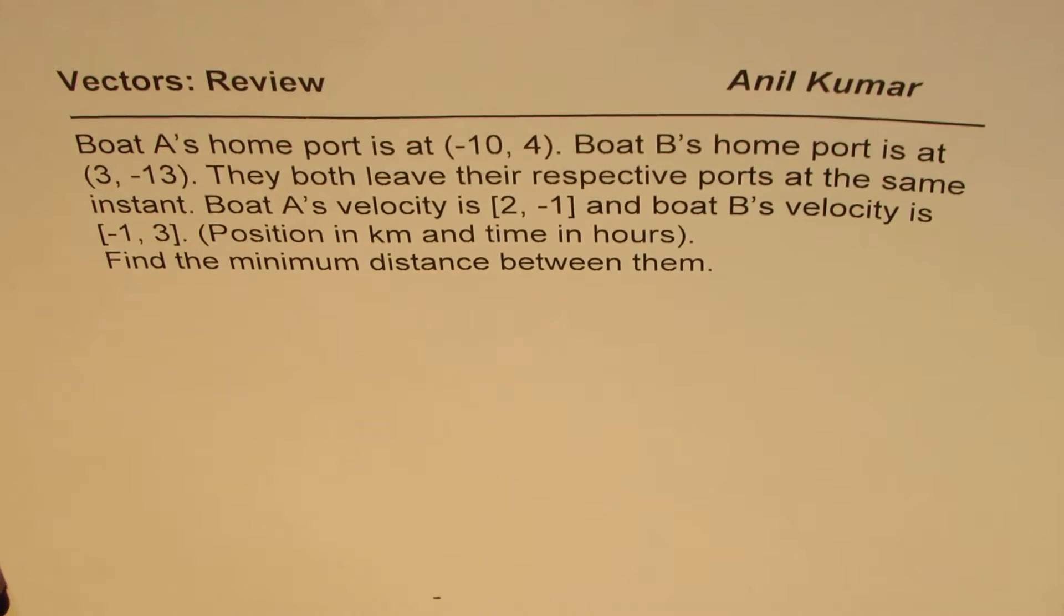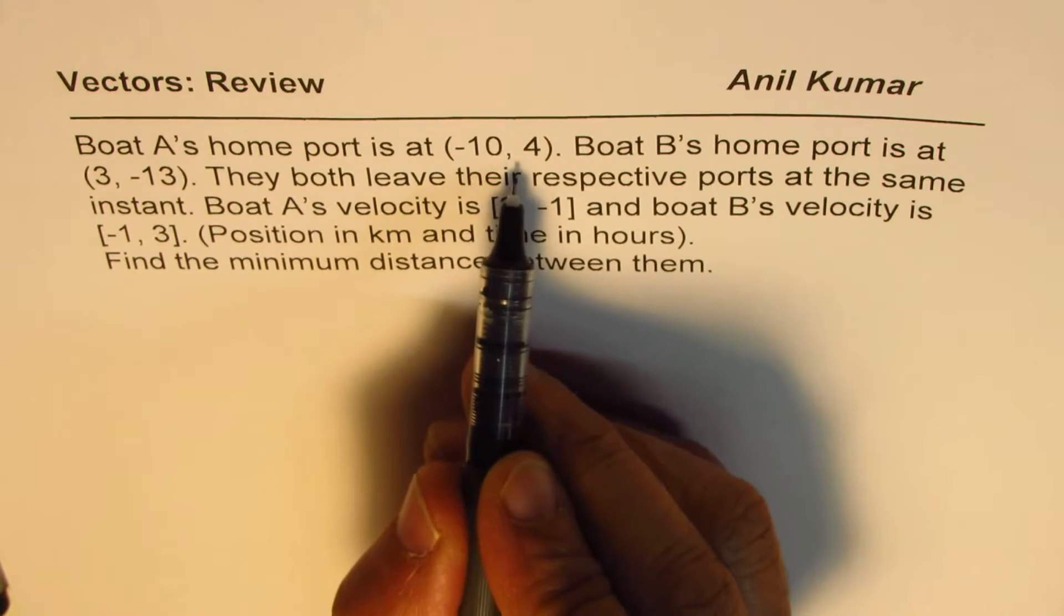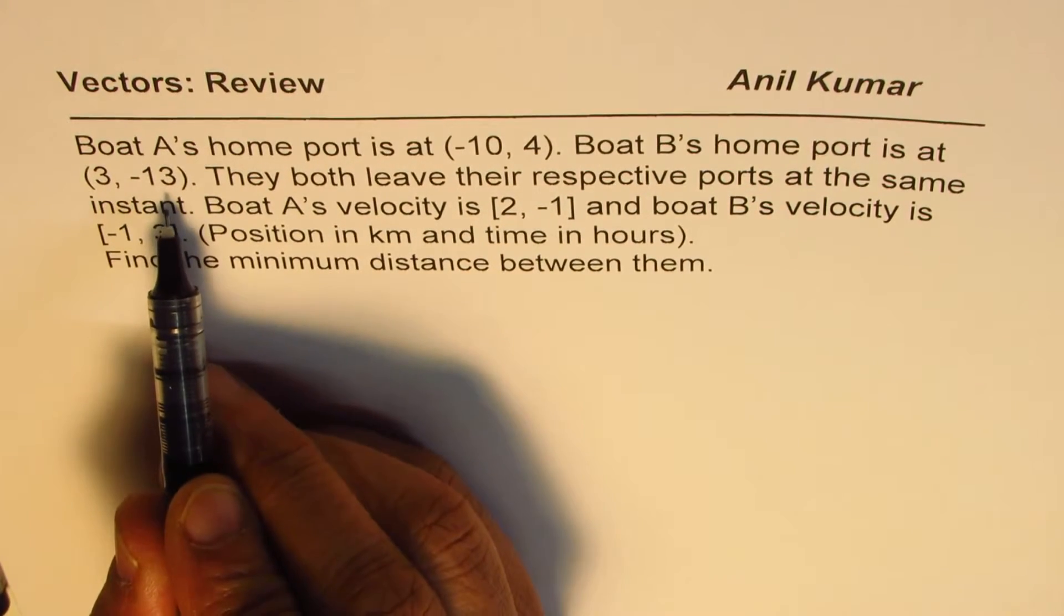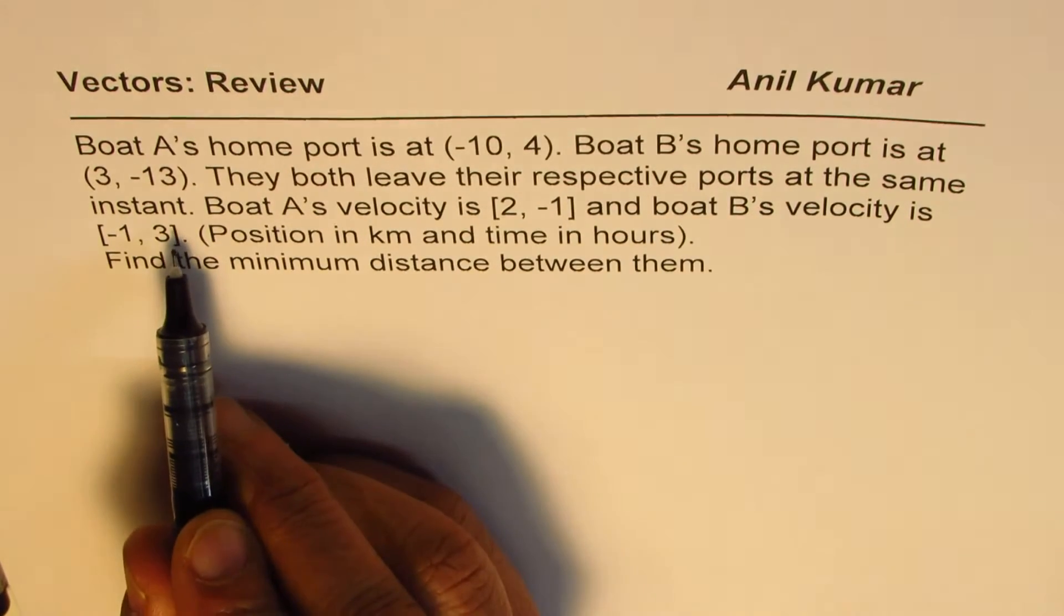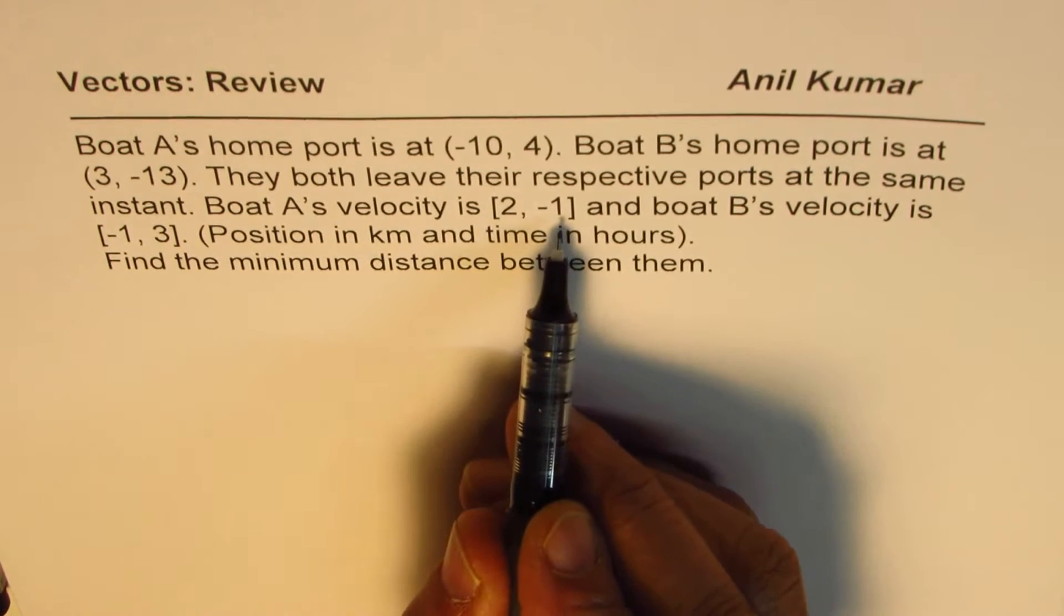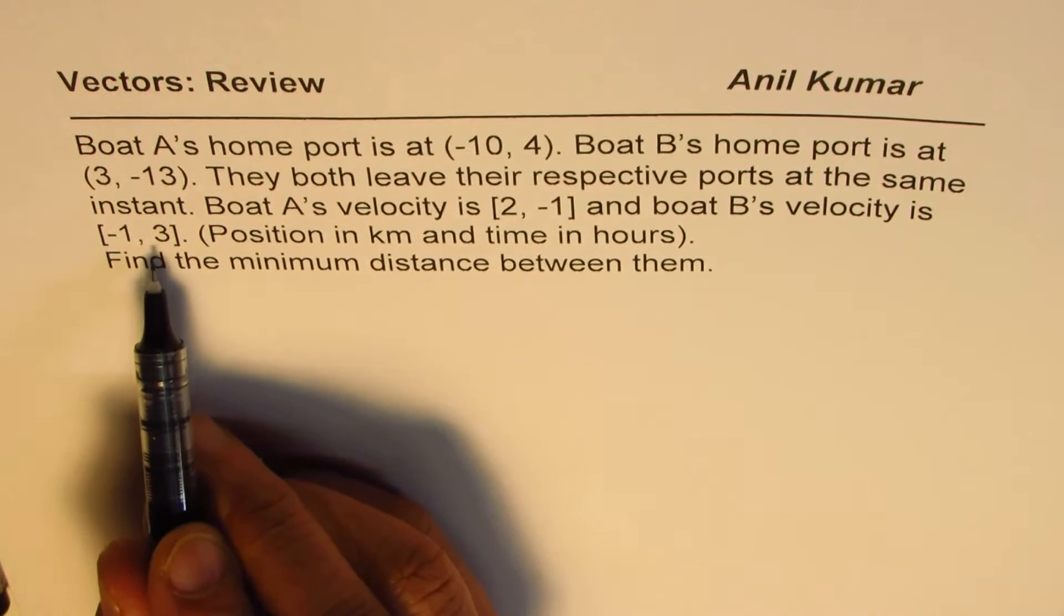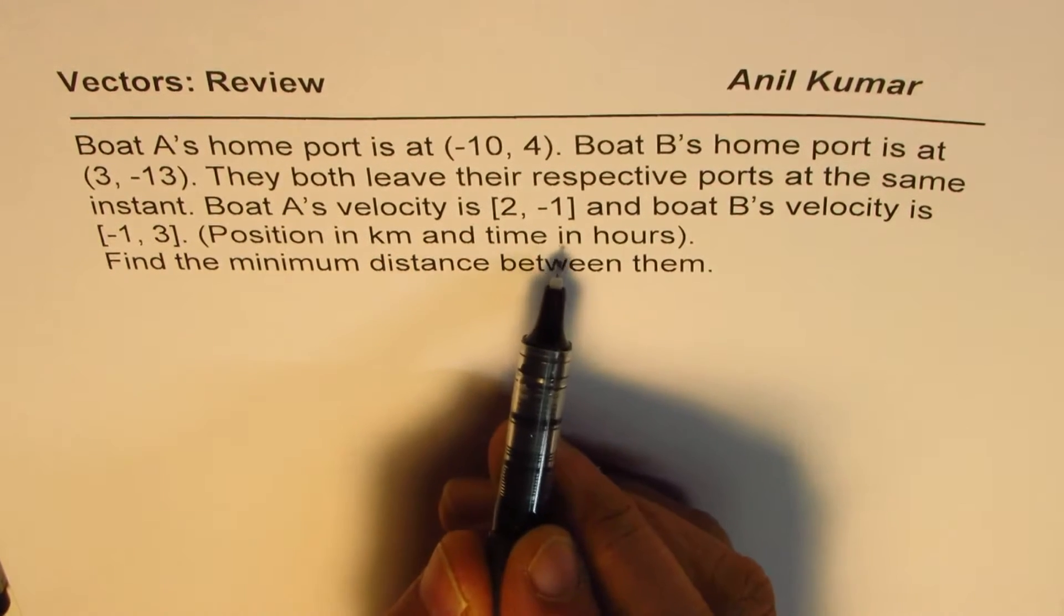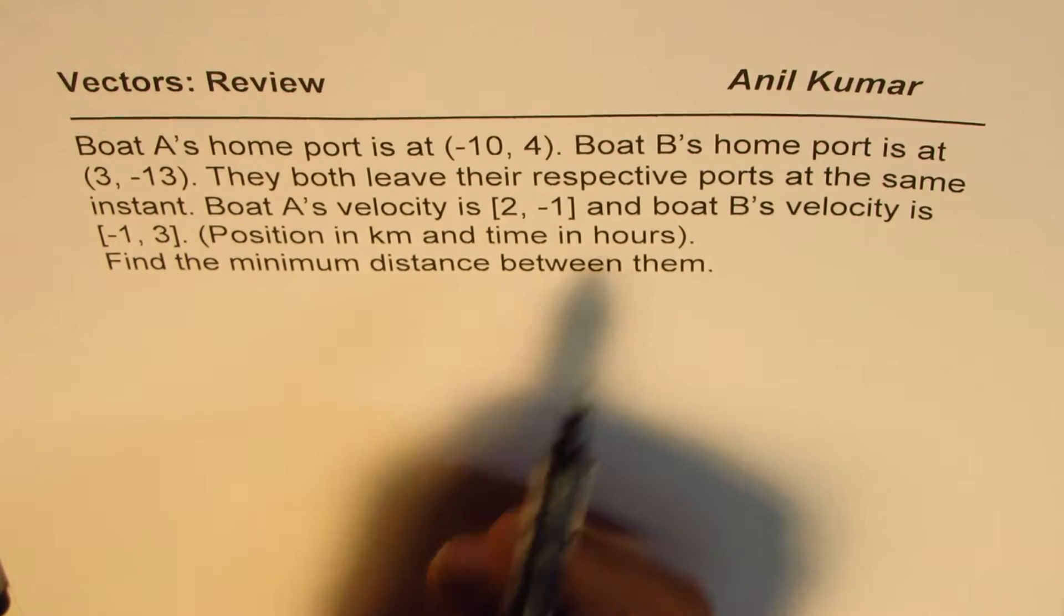The question is: Boat A's home port is at (-10, 4). Boat B's home port is at (3, -13). They both leave their respective ports at the same instant. Boat A's velocity is (2, -1) and boat B's velocity is (-1, 3). Position is in kilometers and time in hours. Find the minimum distance between them.